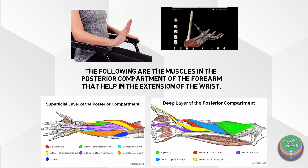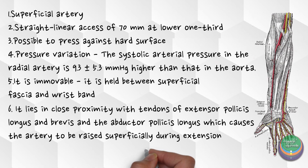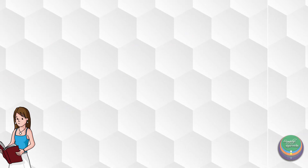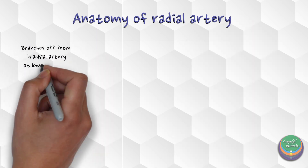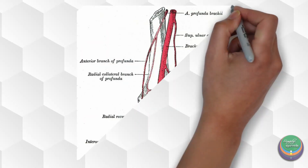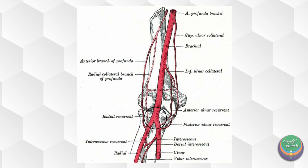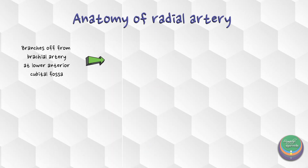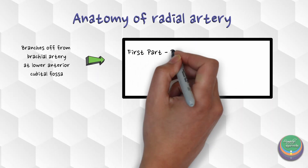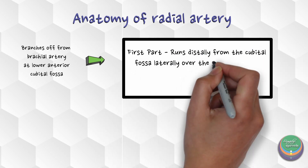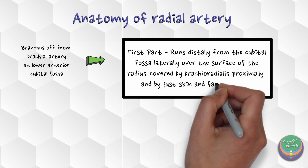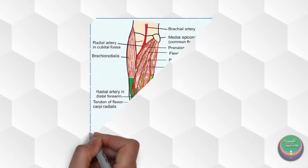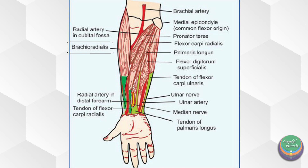The above statements justify why the radial artery is the most commonly used site for pulse examination. Now let's quickly jump into the anatomy of the radial artery. The radial artery has its origin from the brachial artery. The brachial artery bifurcates in the anterior part of the cubital fossa to form two branches: the ulnar artery, which runs medially, and the radial artery, which runs laterally. The course of the radial artery begins from the anterior part of the cubital fossa, runs distally on the anterior part of the forearm where it lies on the hard surface of the radius. Proximally it is covered by the brachioradialis, whereas distally it is covered by just the fascia and the skin.